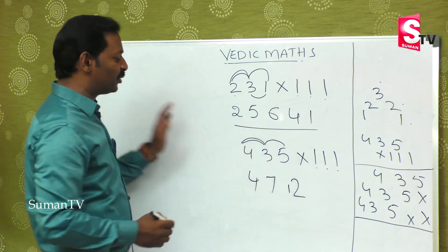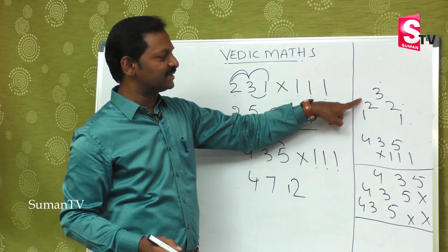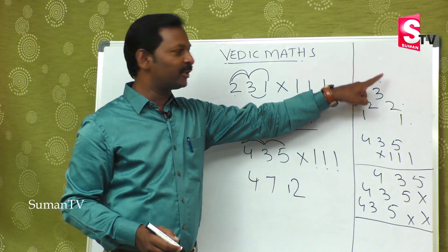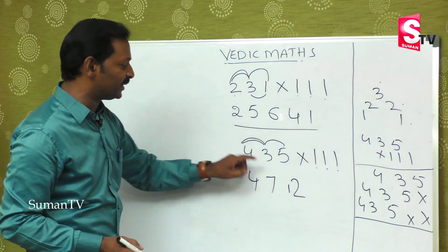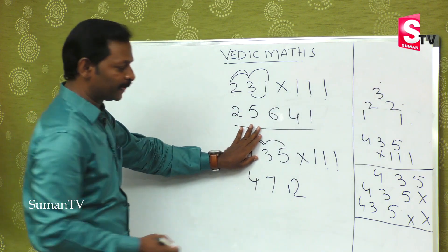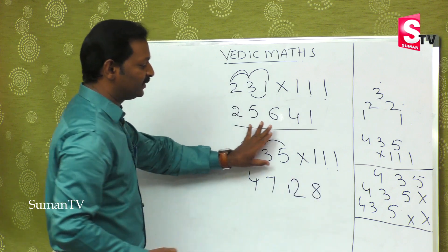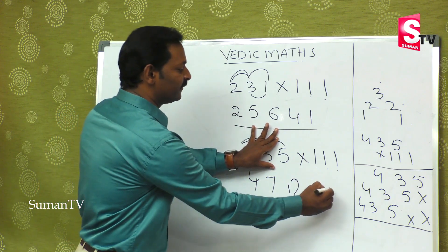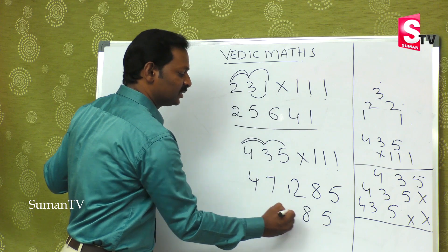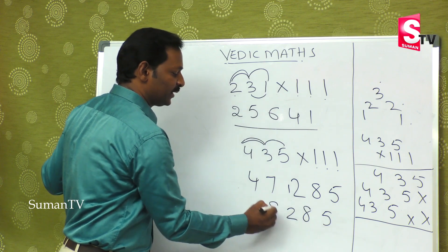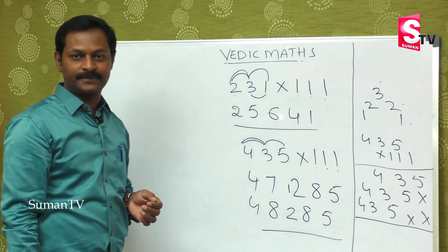The first three steps give us: 1st digit, then 1st+2nd, then 1st+2nd+3rd. We close that — that is 8. And we close the next — that is 5. So the final answer is 5, 8, 2, 8, 4. This is the right answer.